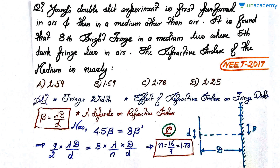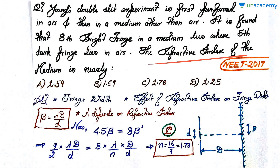The next question: Young's double slit experiment is first performed in air and then in a medium other than air. It is found that the 8th bright fringe in the medium lies where the 5th dark fringe lies in air. The refractive index of the medium is nearly — with given options. This is a very good question requiring knowledge of several concepts.